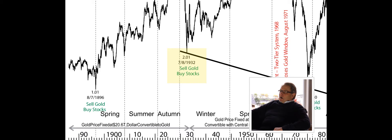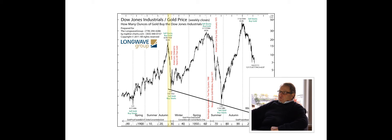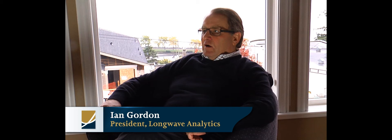However, I truly believe that that relationship would have been much lower had the Dow, had gold been allowed to float, had the price been free. Because we know during this great debacle when the banking system was collapsing in the 30s, everybody was moving to gold.